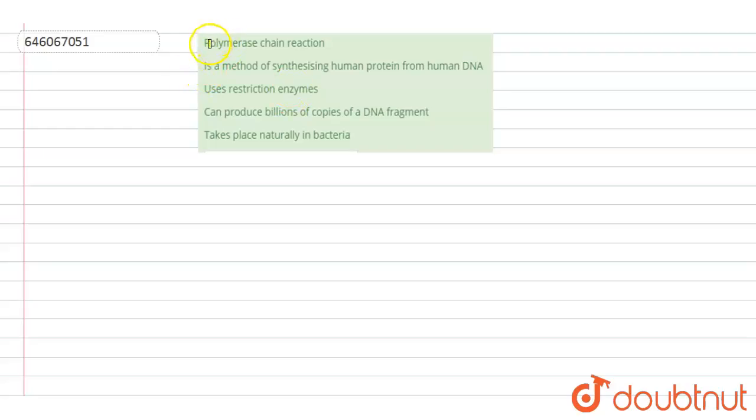Question is Polymerase Chain Reaction. Option A: is a method of synthesizing human protein from human DNA, uses restriction enzyme, can produce billions of copies of DNA fragment, takes place naturally in bacteria.